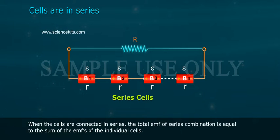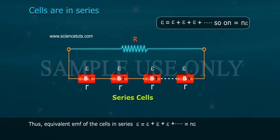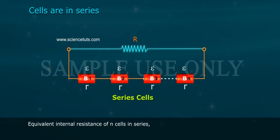When the cells are connected in series, the total EMF of series combination is equal to the sum of the EMFs of the individual cells. Thus, equivalent EMF of the cells in series: epsilon equivalent equals epsilon plus epsilon plus so on equals N epsilon.